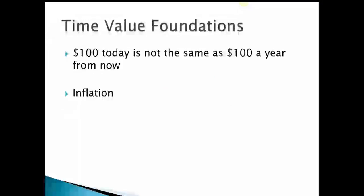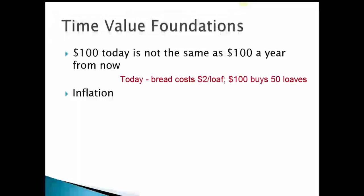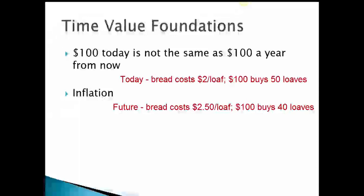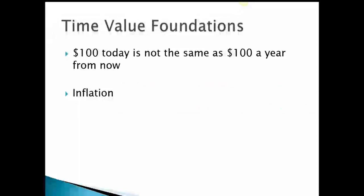Inflation means that the purchasing power of money deteriorates over time — you can buy less stuff with the same dollars. For instance, if a loaf of bread costs $2 today, $100 buys 50 loaves. But two or three years from now, if bread costs $2.50 due to inflation, that same $100 only buys 40 loaves. So $100 today gets you more stuff than $100 in the future.